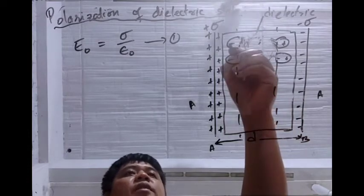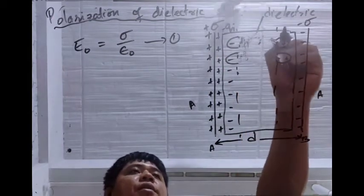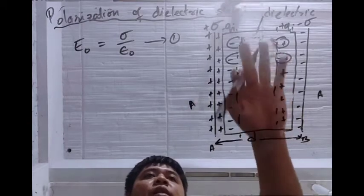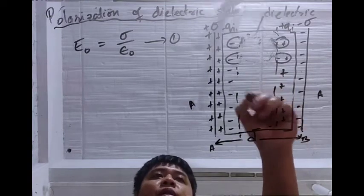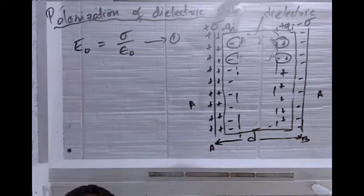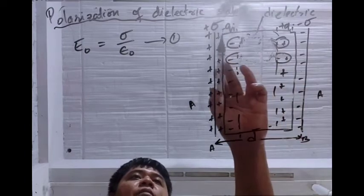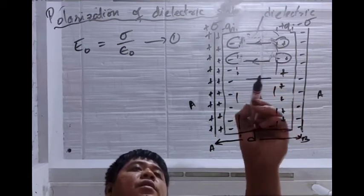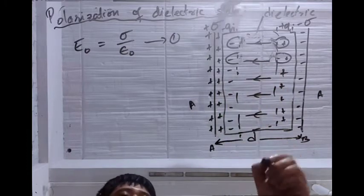We can say that a negative charge −QI is induced on one side and +QI on the other side — these are induced charges. The net charge inside the dotted region is zero, they cancel. Because of these charges QI on one side and −QI on the other side, they produce an electric field along this direction — that is the electric field due to polarization, denoted by EP.